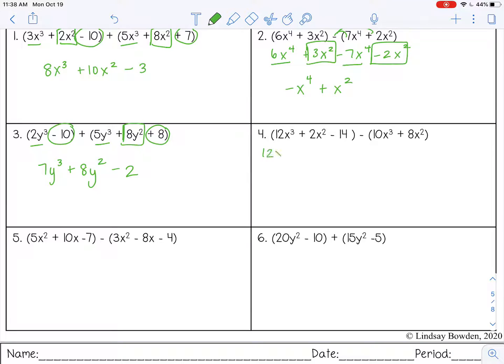Here I want to distribute my negative. So I have 12x cubed minus 10x cubed. 12 minus 10 is 2.